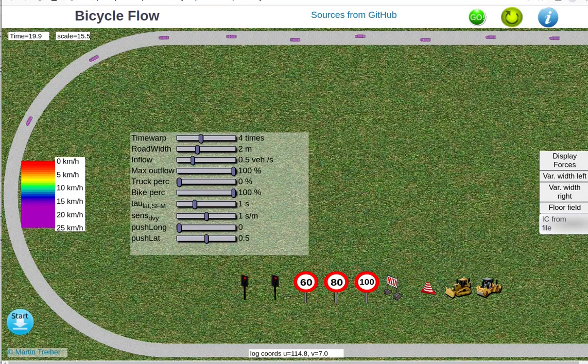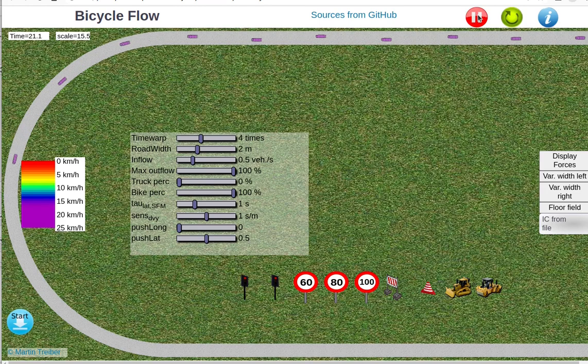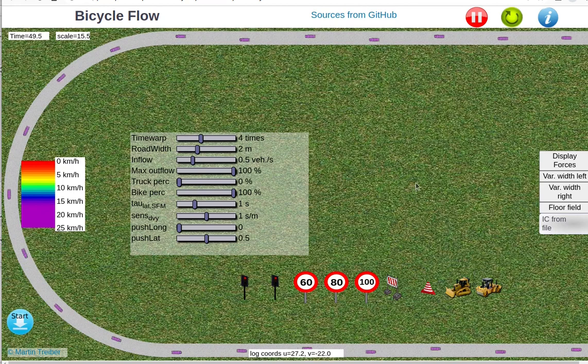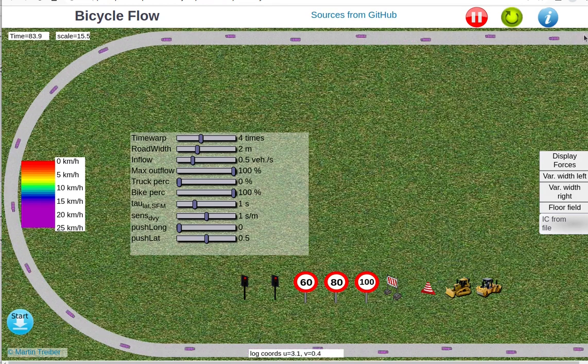The second application of our model I want to show is bicycle flow. For this, I adapted the road geometry, the vehicle dimensions, and the model parameters. For example, introducing a desired speed of 5 meters per second equal to 18 kilometers per hour. When starting the simulation with 2-meter bicycle path width, you see that spontaneously at the inflow, a staggered following mode occurs. Here we have inflow at the center, but now it becomes staggered.